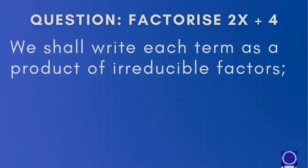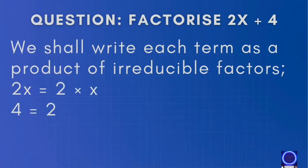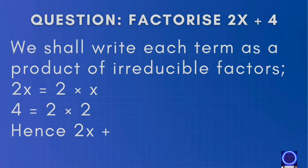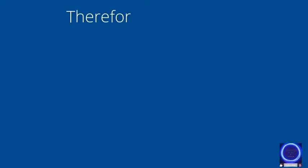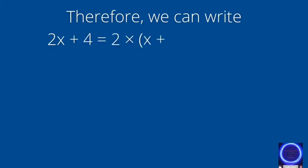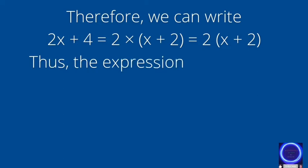We shall write each term as a product of irreducible factors. 2x can be written as 2 into x, and 4 can be written as 2 into 2. Hence, 2x plus 4 is equal to 2 into x plus 2 into 2. Therefore, we can write 2x plus 4 is equal to 2 whole into x plus 2.